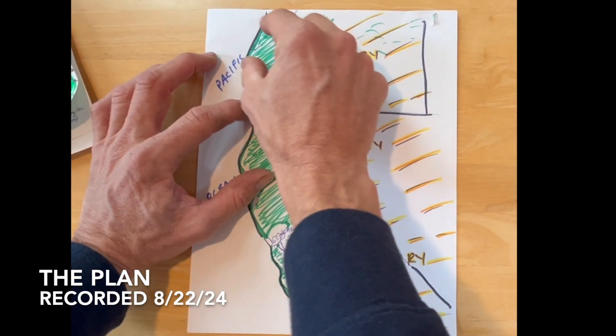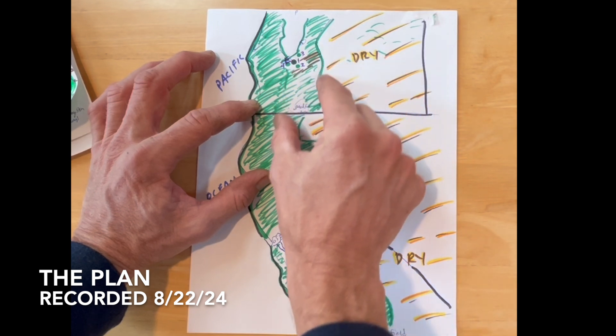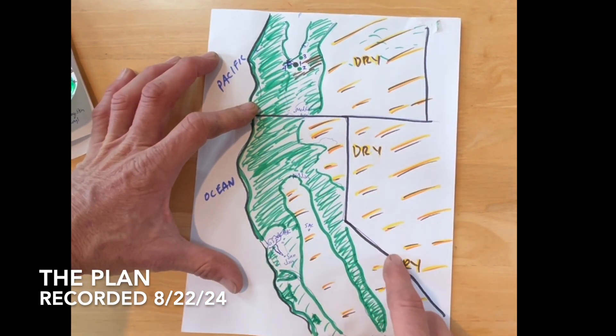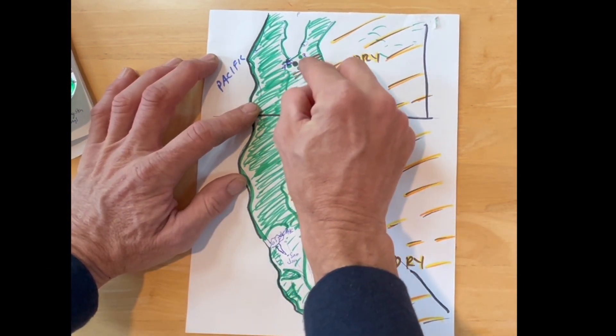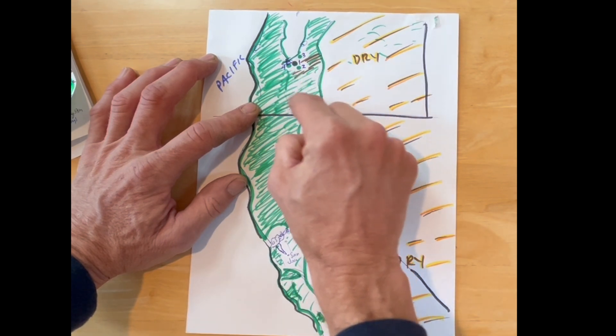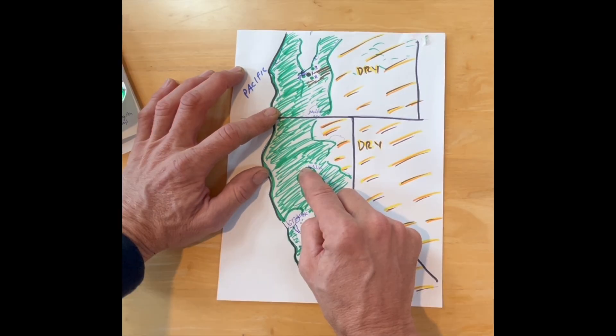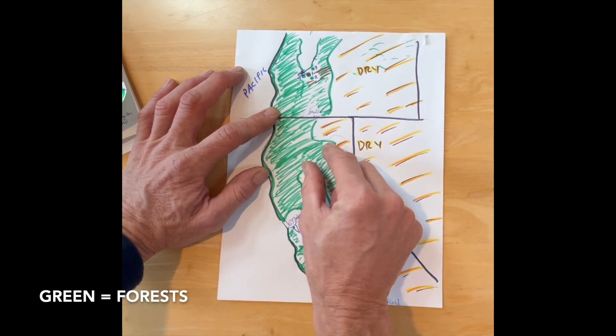The plan is to pull moisture from the Pacific and send it down the west coast forests. I started on the east side of Eugene because the fires are really intense right in here. And we have the 430,000 acre fire here in California. I'm trying to affect all of that.